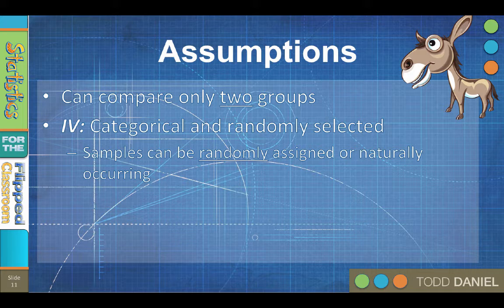Randomly assigned groups are used with an experimental methodology. For instance, you randomly assign participants to be in the experimental versus the control group, or you randomly assign participants to be in the caffeine-drinking group or the no-caffeine group.